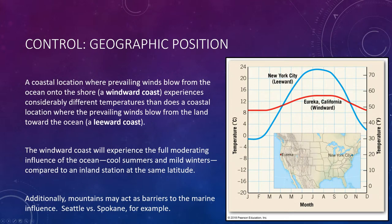Seattle and Spokane, both in the state of Washington, illustrate a second aspect of geographic position: mountains that act as barriers. Although Spokane is only about 220 miles east of Seattle, the towering Cascade Range separates the cities. Consequently, Seattle's temperatures show a marked marine influence, but Spokane's are more typical of a continental situation. Spokane is 13 degrees Fahrenheit cooler than Seattle in January and 7 degrees warmer in July. The annual temperature range at Spokane is 20 degrees Fahrenheit greater than at Seattle. The Cascade Range effectively cuts off Spokane from the moderating influence of the ocean.